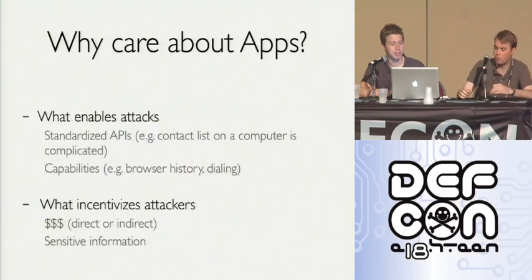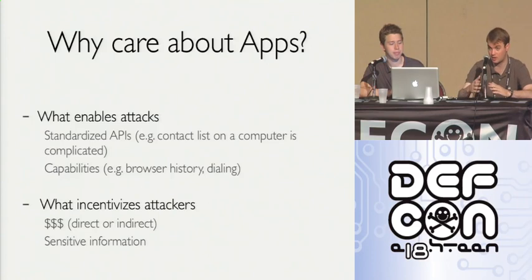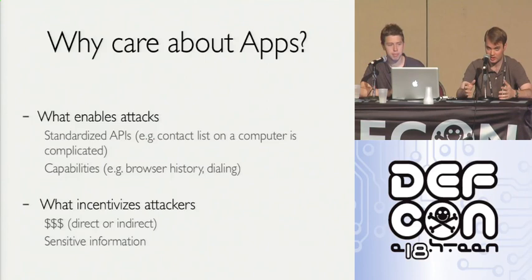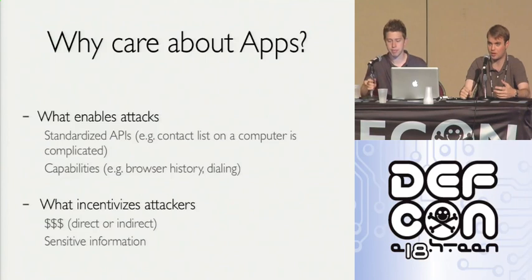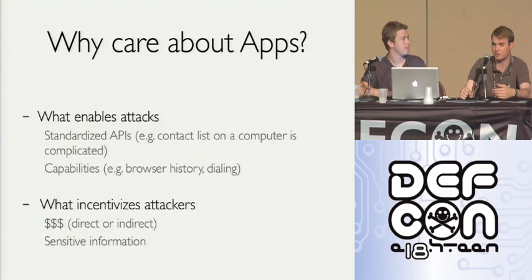What enables mobile attacks more easily than ever? Standardized APIs make it very easy to call an API and grab contact information — it's very scalable to build an attack. The capabilities are so rich and deep that once you have an exploit, it's incredibly easy to grab data. There's clearly a monetary incentive and sensitive information driving those attacks.